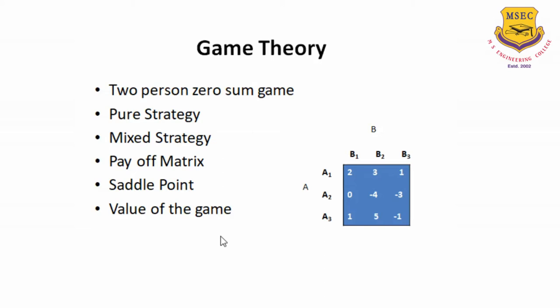When we consider the two persons, now let's say A plays different strategies. What are the strategies that he can play? He can play strategy A1, A2, A3. Similarly, B can play strategy B1, B2, B3. When A plays one of the strategies — let's say A1 — and he knows well in advance and is definite about playing only A1 throughout his game, then we say that he has got a pure strategy.